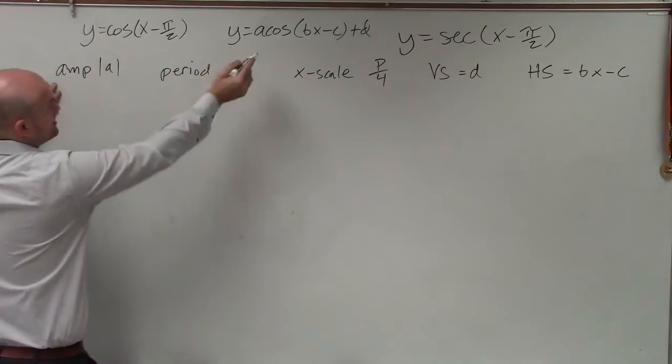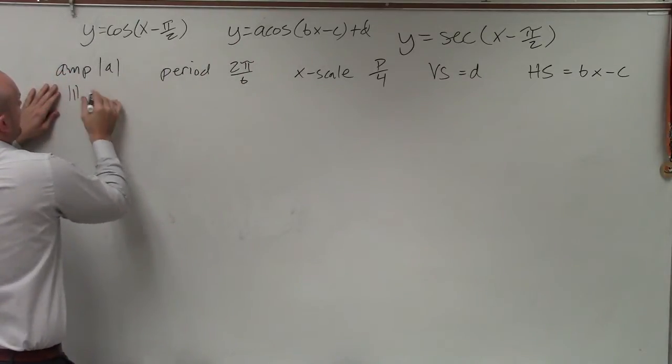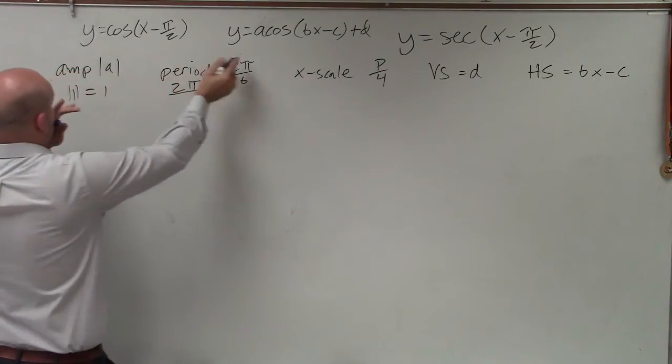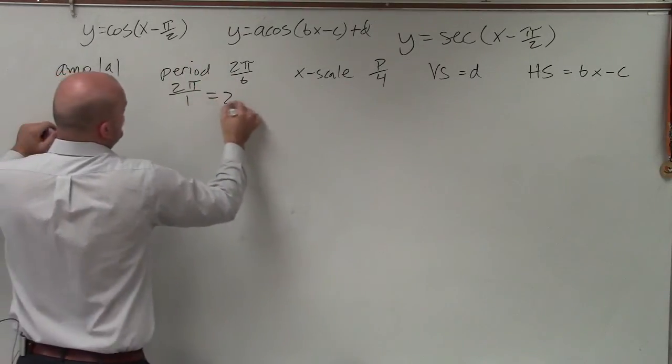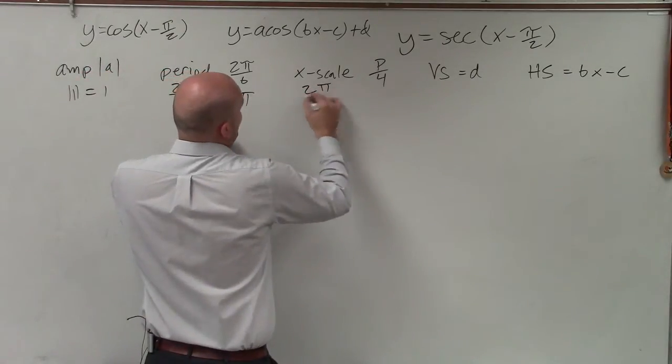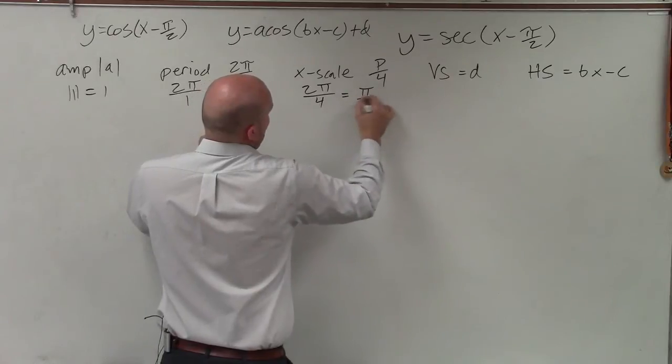Amplitude for cosine, you can see in this equation, is just going to be the absolute value of 1, which is equal to 1. Period is going to be 2 pi divided by b. b in this case is 1. So that's just equal to 2 pi. The x scale is going to be my period, 2 pi divided by 4, which is equal to pi halves.